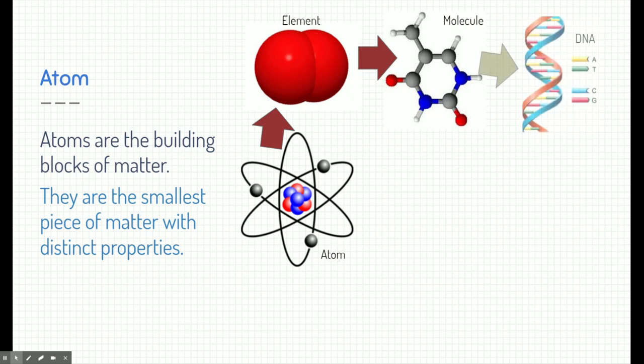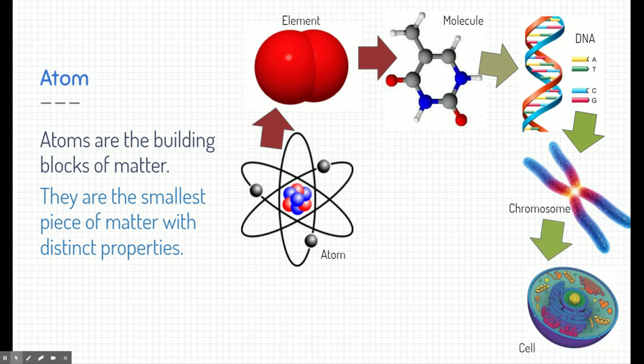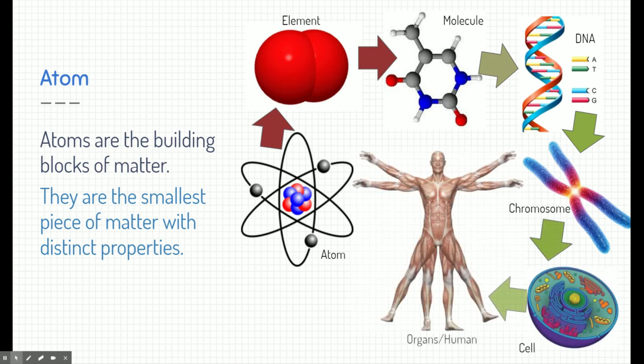For example, molecules — put a few together and you'll get DNA, which is the blueprint of you. DNA tightly bound together makes up chromosomes, and chromosomes are found inside the nuclei of cells. Cells make up your organs, they make up who you are and they build you.